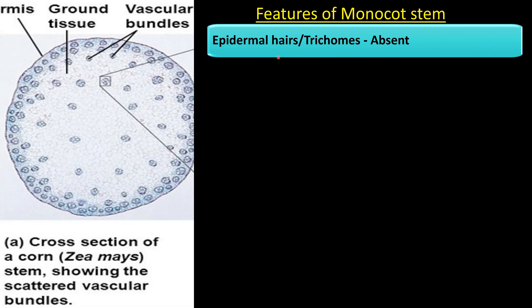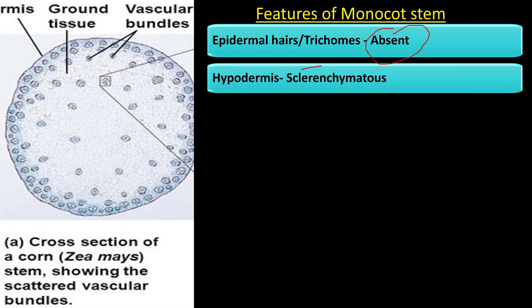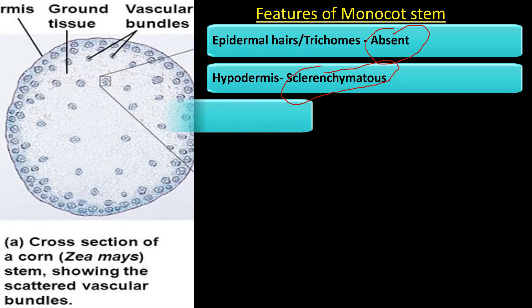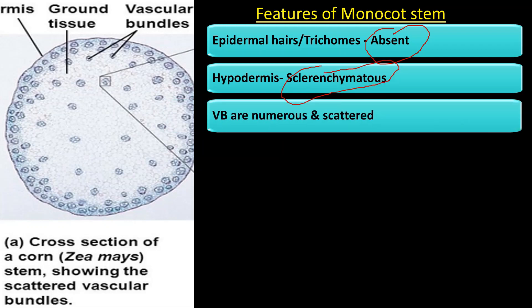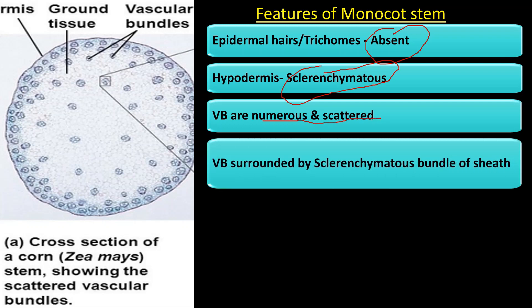In case of dicot plants, epidermal hairs are present, which are absent in monocot plants. In monocot plants, the hypodermis is made up of sclerenchyma. Vascular bundles are numerous and scattered in the ground tissue, and each vascular bundle is surrounded by a sclerenchymatous bundle sheath.